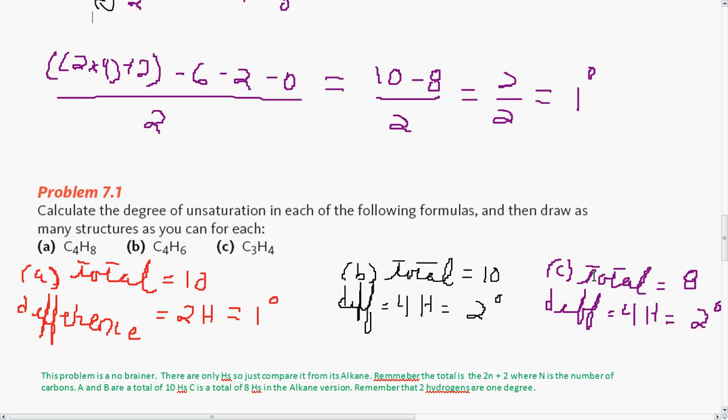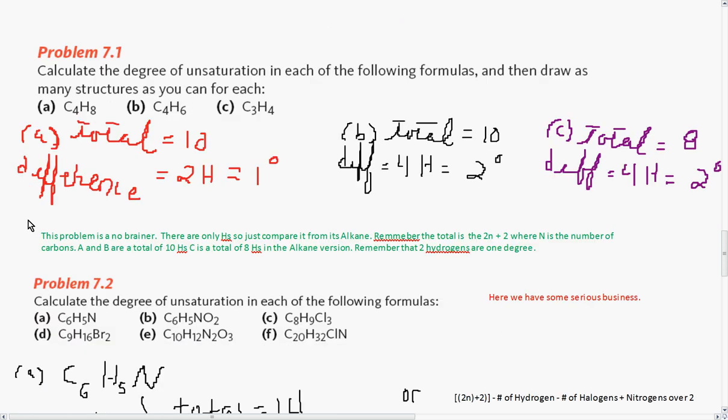Here are some problems. Calculate the degree of unsaturation in each of the following formulas, then draw as many structures as you can for each. We're not drawing structures. We're just focused on the degrees here. So C4H8, you have a total of 10 in your alkane, which gives you a difference of 2 hydrogen, which is 1 degree.